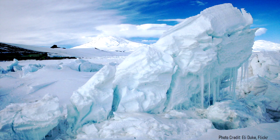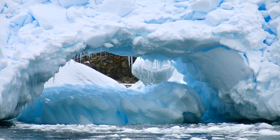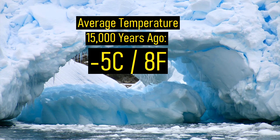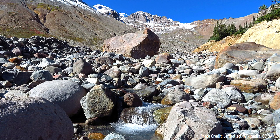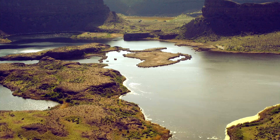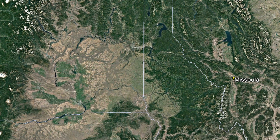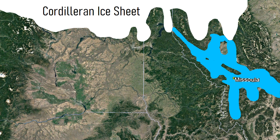15,000 years ago, the Ice Age was still ongoing as a thick glacial ice sheet stretched across all of Canada and covered the northern half of Washington state. Although it was much colder than today, the planet was slowly beginning to warm, causing ice sheets to retreat and generating a large amount of glacial runoff. Over the span of several decades, a large lake was built around the modern town of Missoula in Montana. This lake did not simply flow west toward the ocean, as its only natural outlet was blocked by a thick sheet of ice on the Clark Fork River in Idaho.